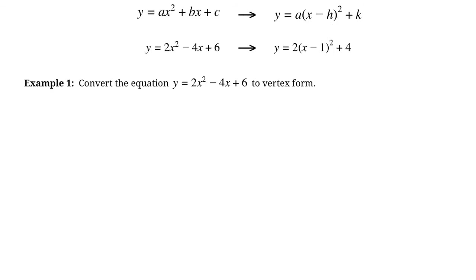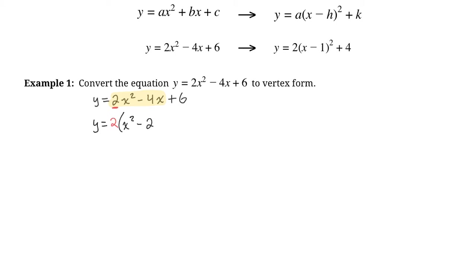Here's our example: the equation we're going to convert is y equals 2x squared minus 4x plus 6 into vertex form. Always make sure the terms are in order: x squared first, then the x term, then the constant. We look at the first two terms — 2x squared minus 4x — and we factor the coefficient in front of x squared out of only those first two terms. We're only factoring out that 2, leaving us with x squared minus 2x in brackets and plus 6 on the outside.